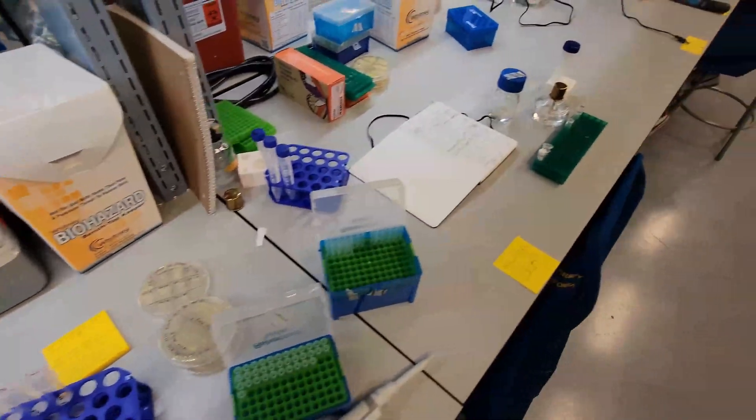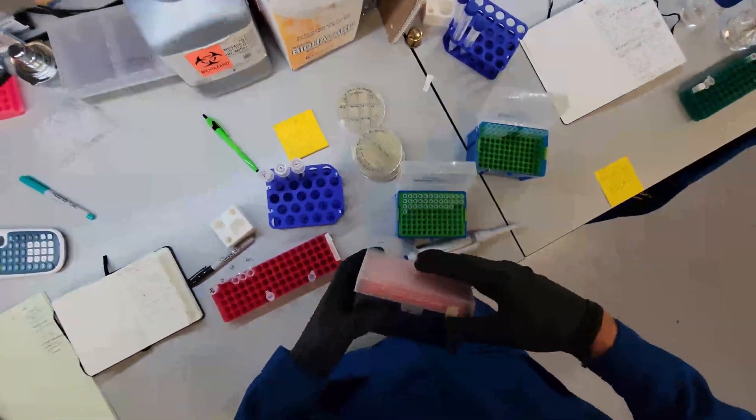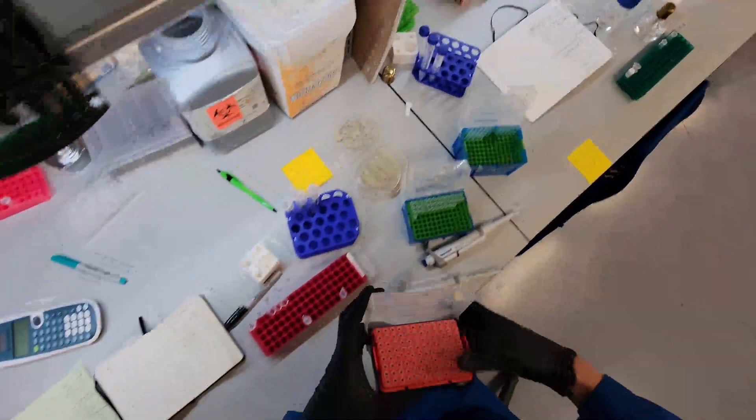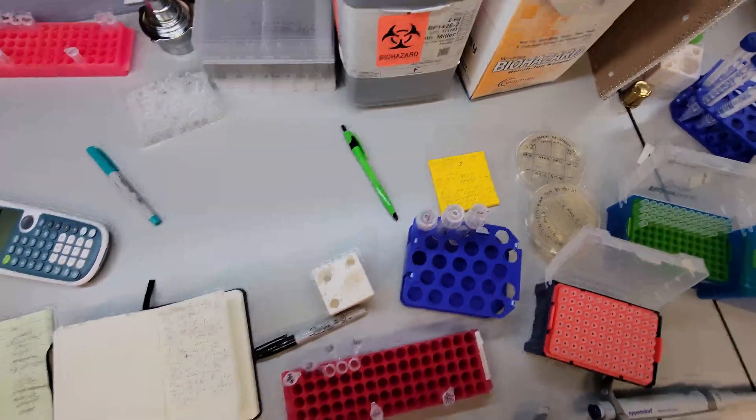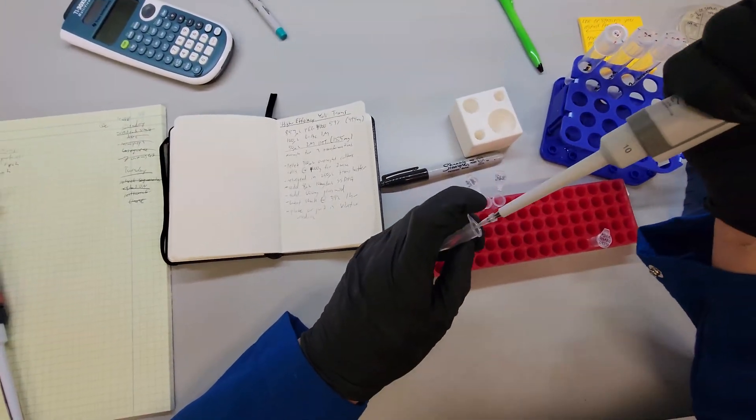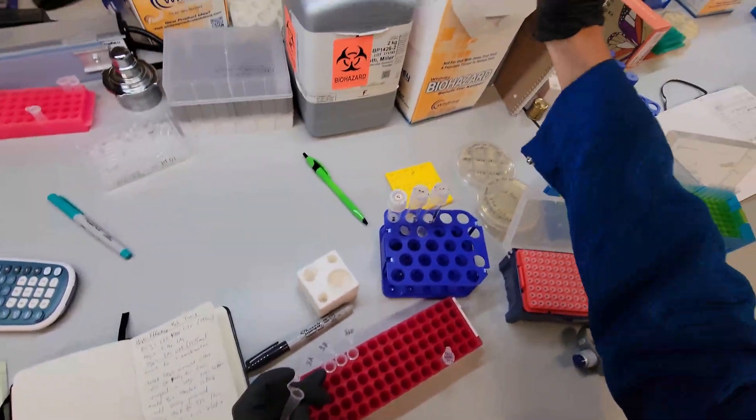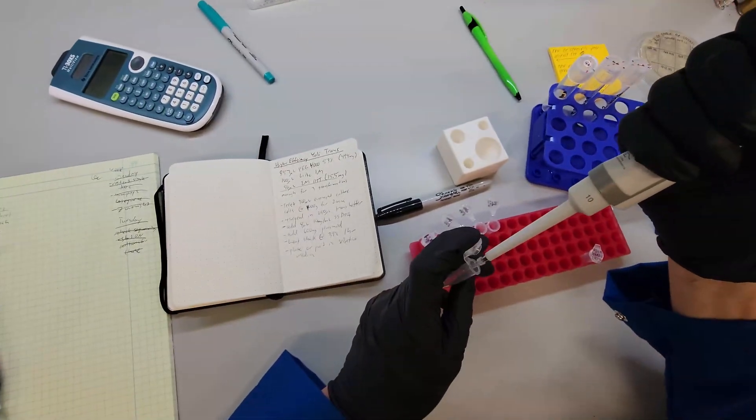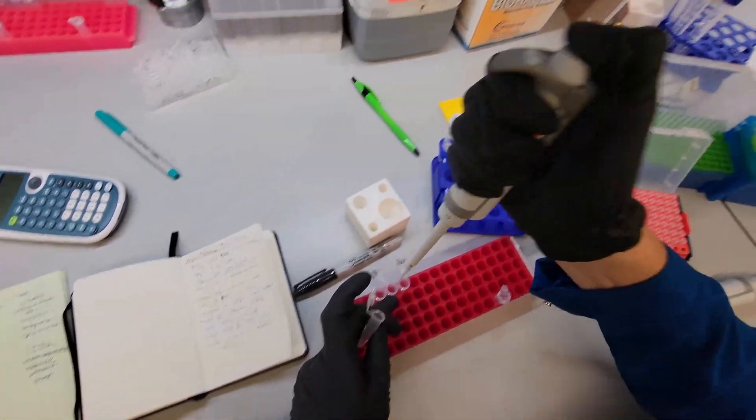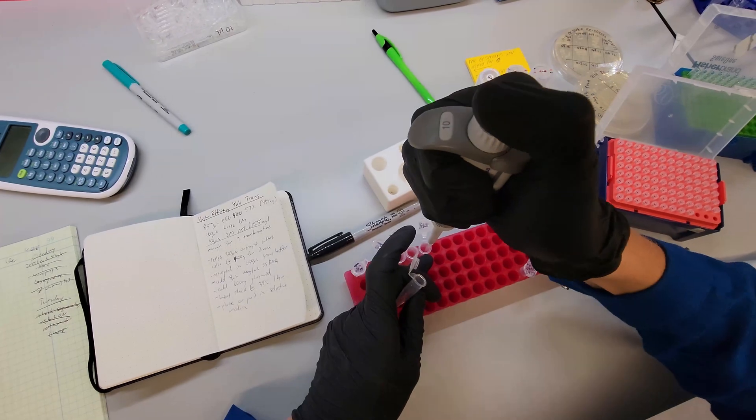Let's add the SS-DNA first. We're going to vortex between all of these steps. So there's eight microliters of the SS-DNA. We're going to vortex.